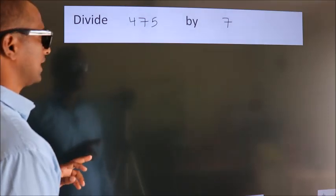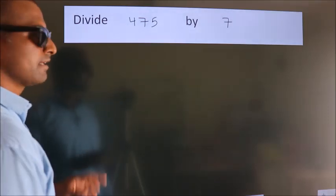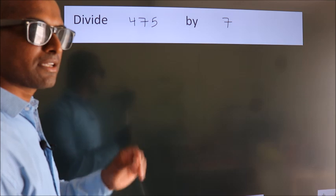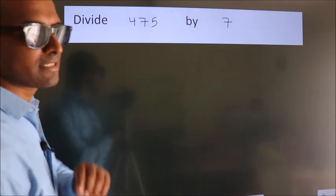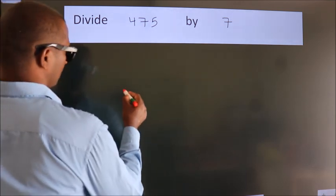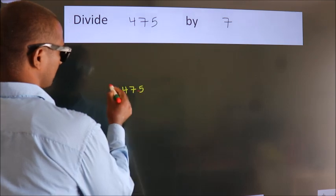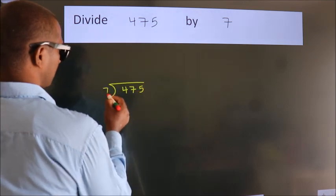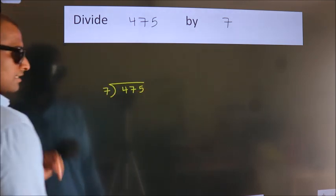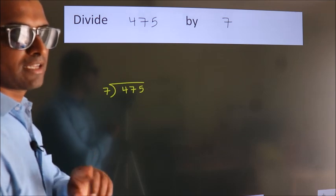Divide 475 by 7. To do this division, we should frame it in this way. 475 here, 7 here. This is your step 1. Next.